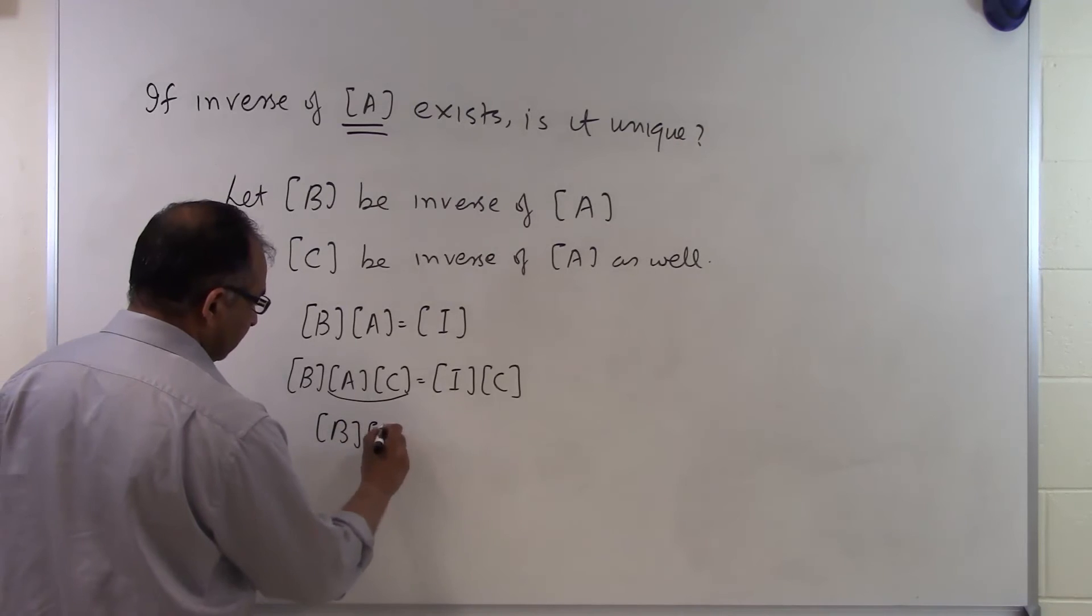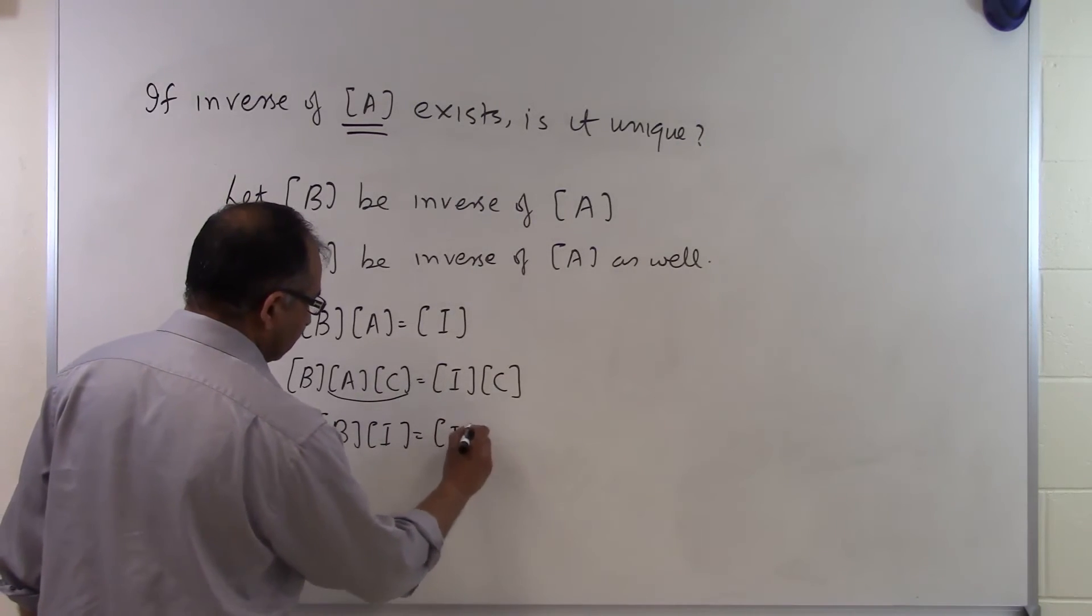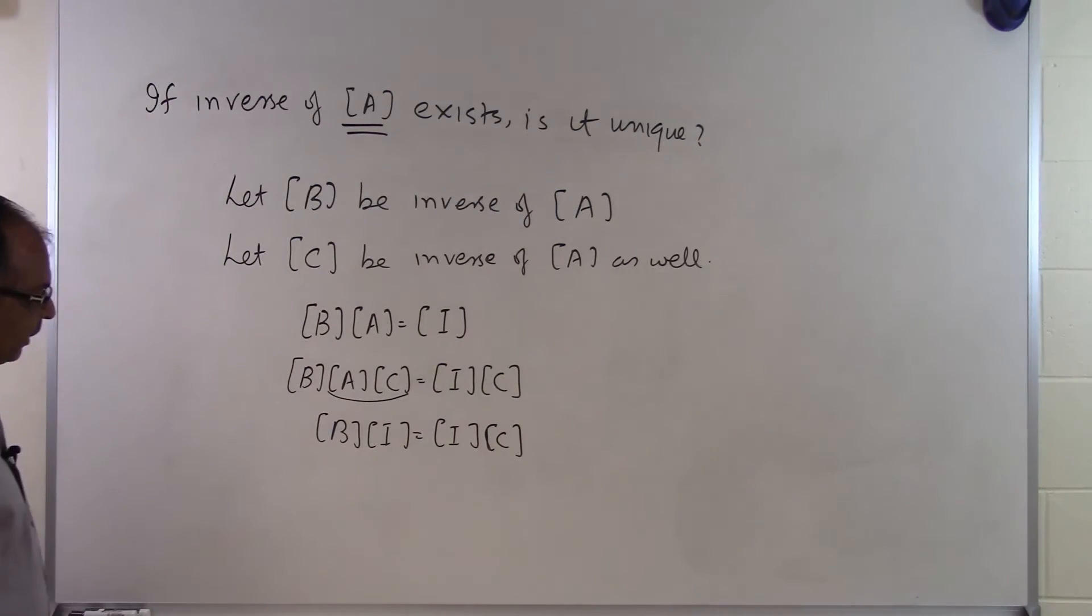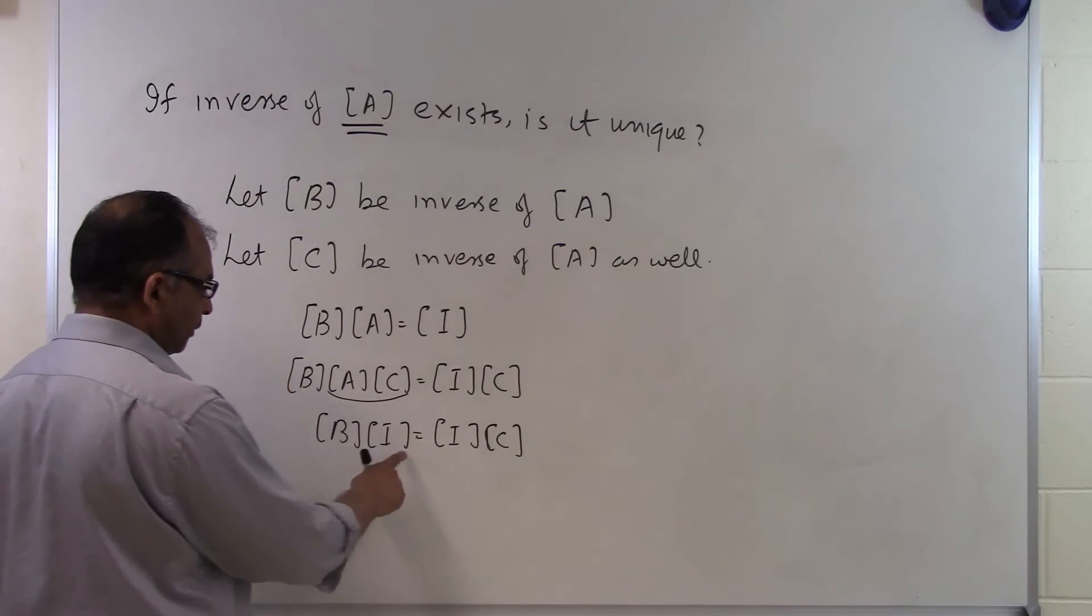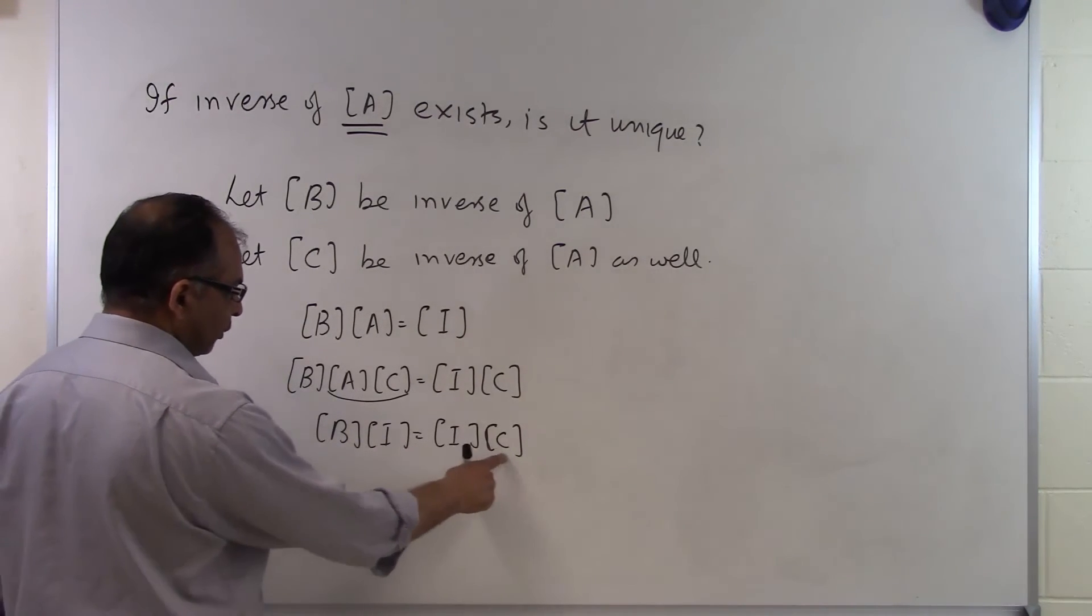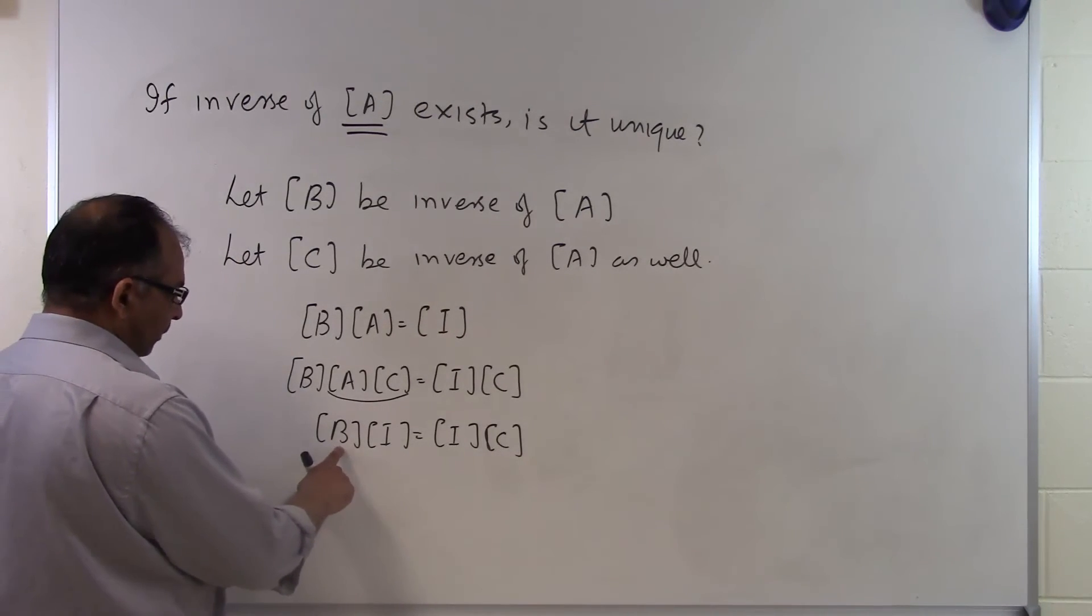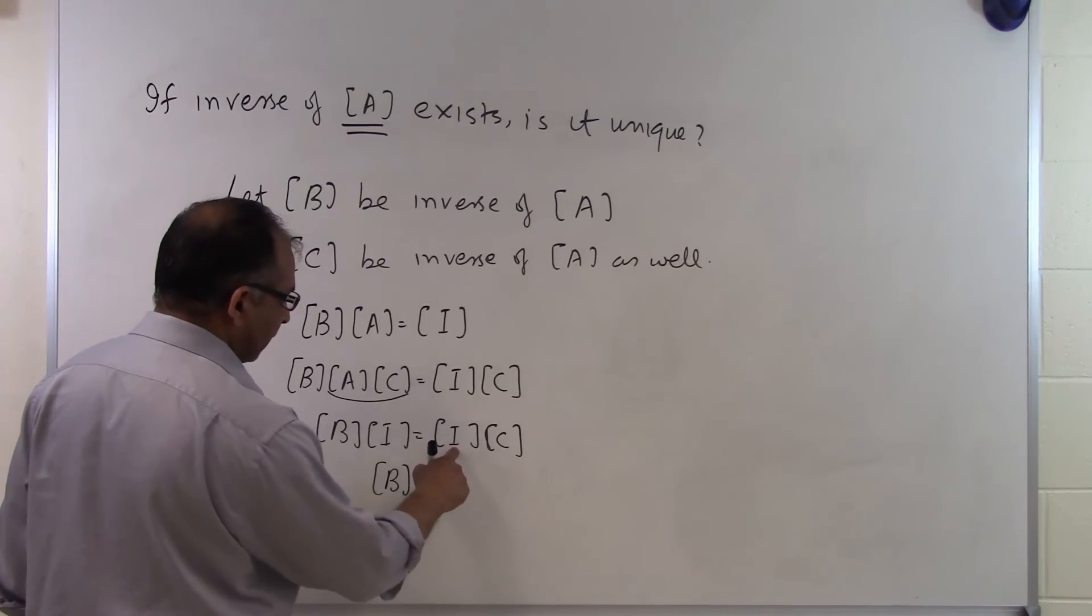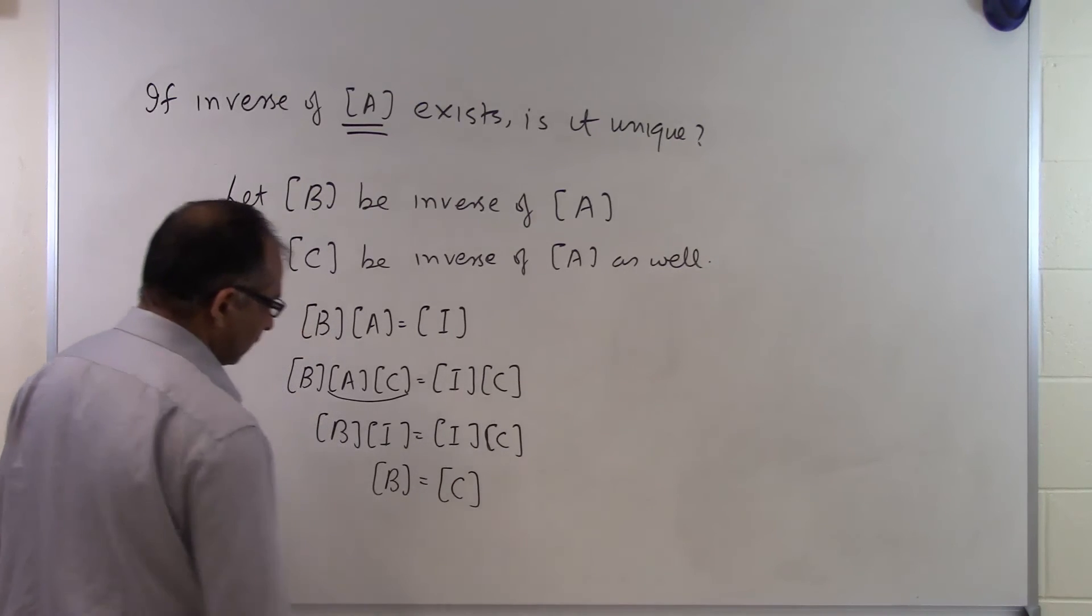But we know that if we want to multiply a matrix by the identity matrix and the multiplication is allowed, which is in this case because both of these matrices are n by n, the B matrix multiplied by the identity matrix will be B itself. And the identity matrix multiplied by the C matrix will be C itself.